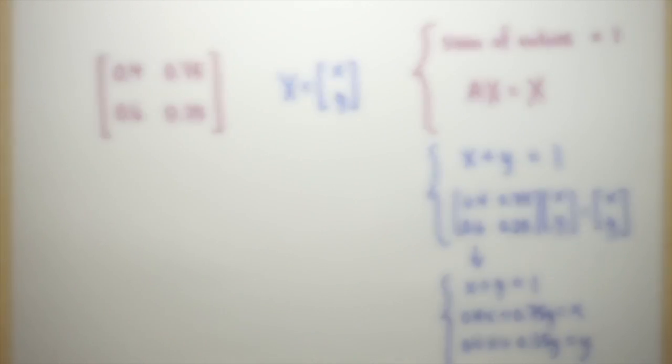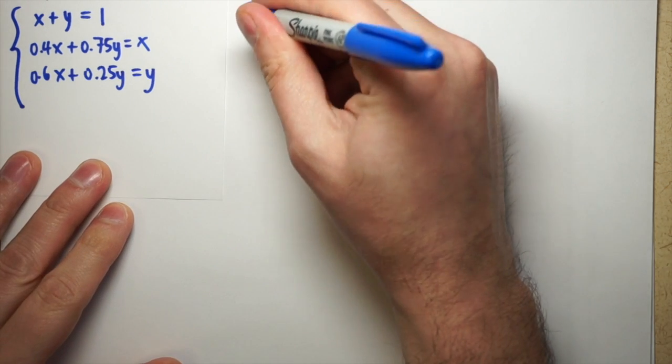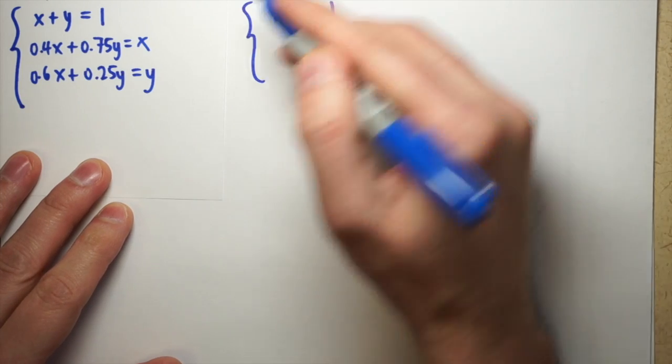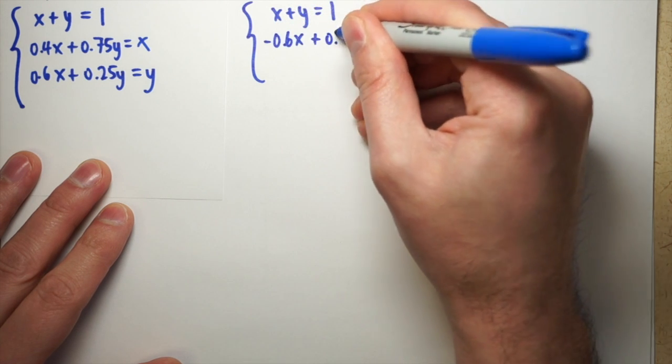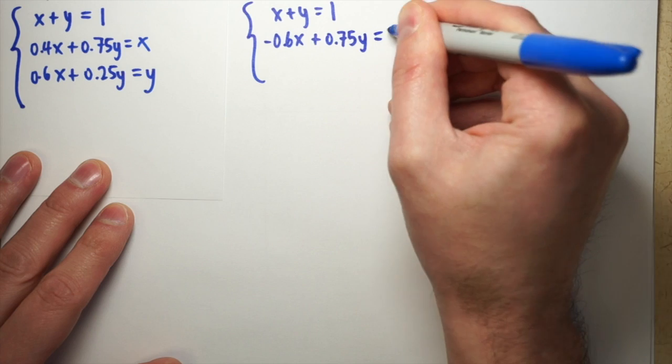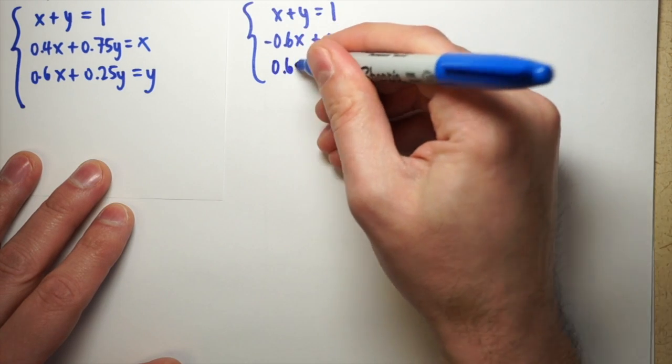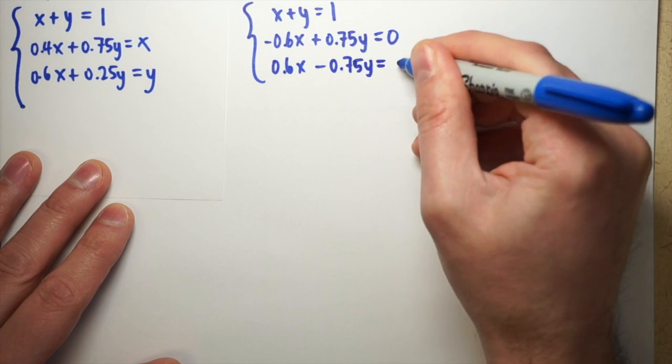Now to continue solving it, I'll simplify the equations a little bit, and we'll find something that will work nicely for this. x plus y equals 1, I'll leave alone still. If I move the x over to the other side here and subtract, I get negative 0.6x plus 0.75y has to equal 0. If I move the y over, I get 0.6x minus 0.75y has to equal 0.